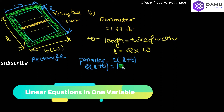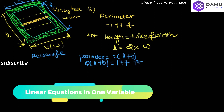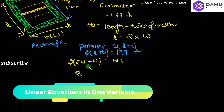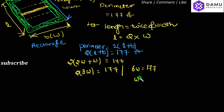So 2 into (L plus B) will be equal to 177 feet. Since L equals 2W, substituting gives us 2 into (2W plus W) equals 177, which simplifies to 6W equals 177.